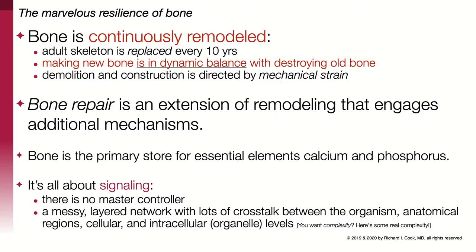The most remarkable thing about bone is that it's being continuously remodeled. The adult skeleton is replaced every 10 years. The making of bone is in dynamic balance with the destroying of bone, so you don't really notice that it's undergoing remodeling. The skeleton seems relatively static because the balance between new bone being created and old bone being chewed up is kept so that there's just about a constant amount of bone and the structure feels very stable. Bone repair — what happens when you break a bone — is an extension of the remodeling process that engages some additional mechanisms.